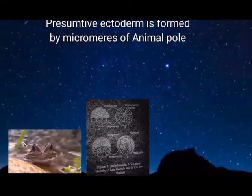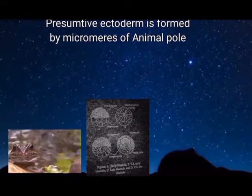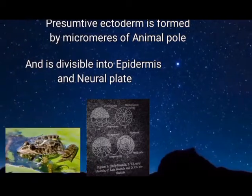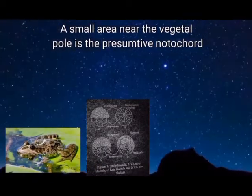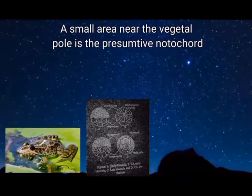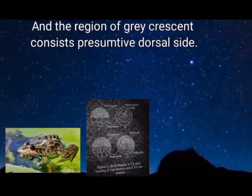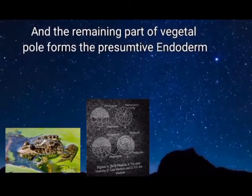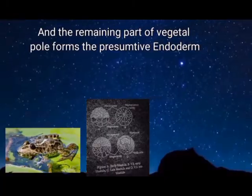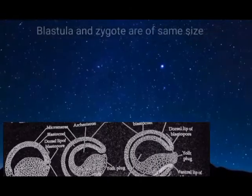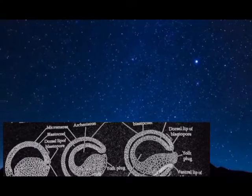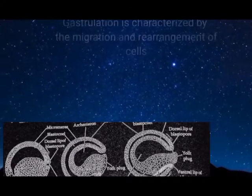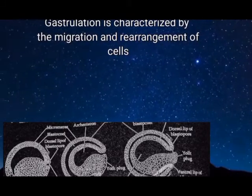The presumptive ectoderm is formed by the micromeres of the animal pole and is divisible into epidermis and neural plate (the nervous system). A small area near the vegetal pole is the presumptive notochord, which later forms the vertebral column. The region of the gray crescent consists of presumptive dorsal mesoderm, and the remaining part of the vegetal pole forms the presumptive endoderm. The blastula of frog is the same size as the zygote.